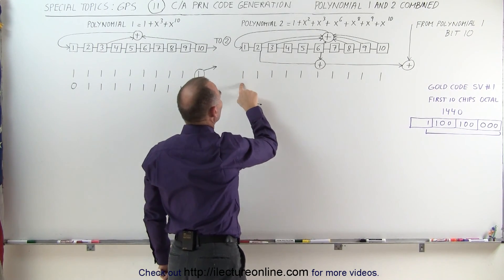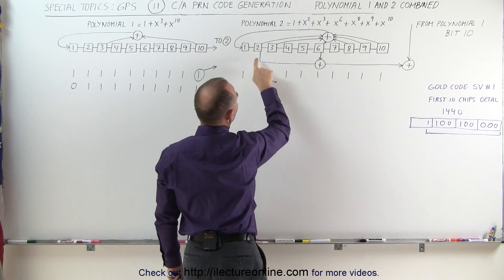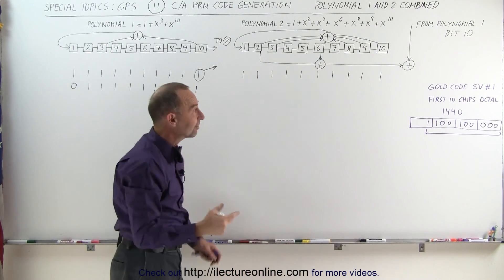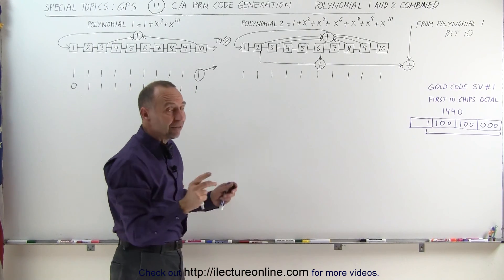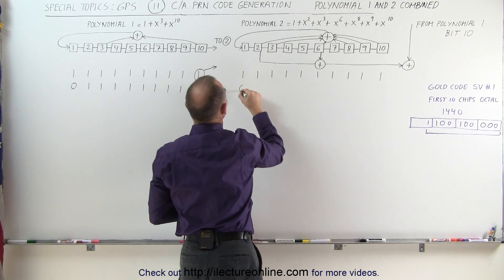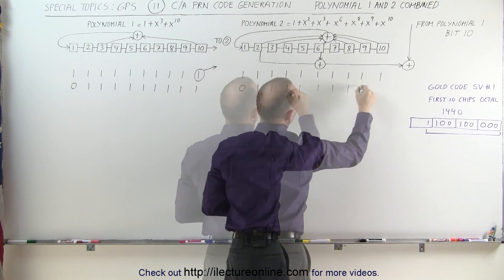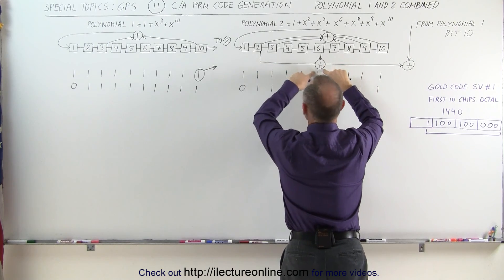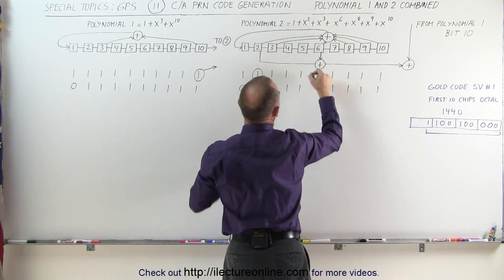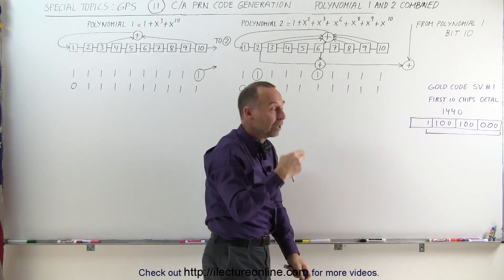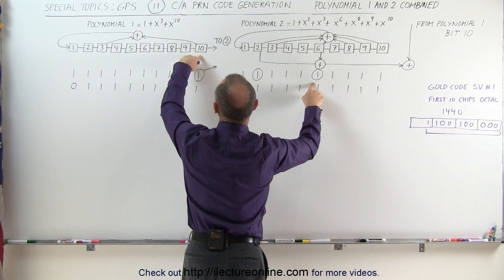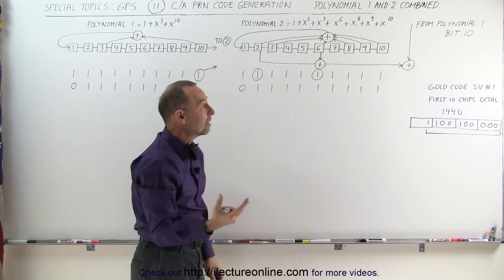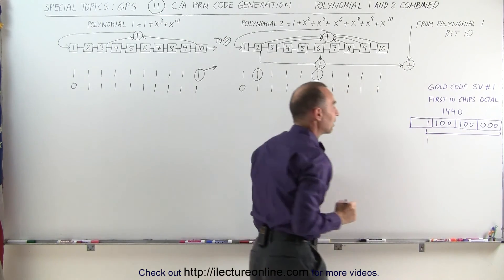We want to know what gets fed into this register on the next step. That comes from adding bits 2, 3, 6, 8, 9, and 10 together. Since they're all 1s and there are 6 of them, that gives 6 — which is even, so it becomes a 0. That gets fed into this register, everything else gets shifted over. Now, what goes into the code? We combine bits 2 and 6 — that's 1 and 1, summed together is 2. We also sum that with the output of bit 10, which is a 1. Adding those 3 together gives 3, which is odd, so that becomes a 1. That's the first chip, and it's correct.